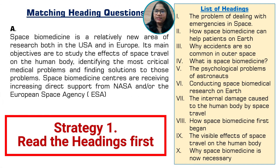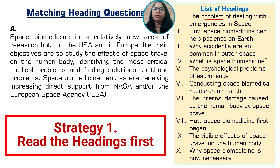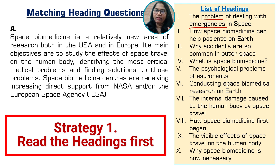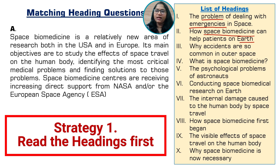Let's go through the 10 given headings. The first heading is 'The problem of dealing with emergencies in space.' Focus on keywords: 'problem' means issues or concerns; 'emergency' can be paraphrased as 'urgent situation.' So: they have some concerns about dealing with an emergency situation in space. The second heading is 'How space biomedicine can help patients on earth' — how space biomedicine is going to help people living on earth. The third is 'Why accidents are so common in outer space' — asking for a reason why accidents happen.